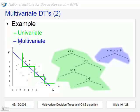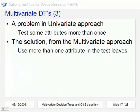And the multivariate approach makes just one test and classifies all the instances. In that example we can find a problem in the univariate approach: that it tests some attributes more than once.